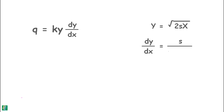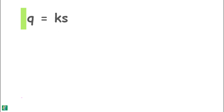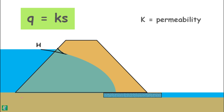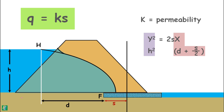From the parabola equation derived earlier, y can be expressed in terms of x and s. Differentiating with respect to x gives the hydraulic gradient dy/dx. Substituting both into the Darcy equation yields a simple expression: q = k·s. This equation gives the approximate discharge through the body of a homogeneous earth dam with a horizontal filter at its downstream end, where k is the soil permeability. The value of s can be determined using the coordinates of point H on the parabola: if H is at distance d from the focus, then the x-coordinate is d + s/2 and the y-coordinate is the reservoir water height. Substituting into the parabola equation and solving gives the value of s.